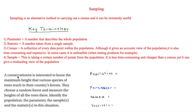Here we have a question: a conservationist is interested to know the maximum height that various species of trees reach in their country's forests. They choose a random forest and measure the heights of all trees there. We have to identify the population, the parameter, the sample, and the statistic in this situation.